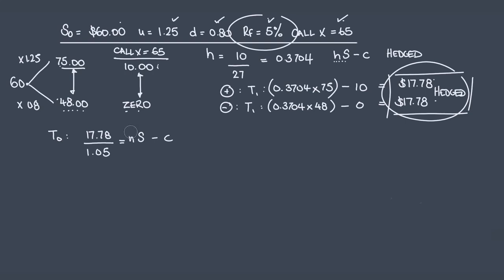Well, let's fill it in, because we know HS, don't we? At T0, H is still 0.3704, and S was 60. Minus C. We have one unknown. We can solve for it. If you solve that, C is $5.29. Okay.